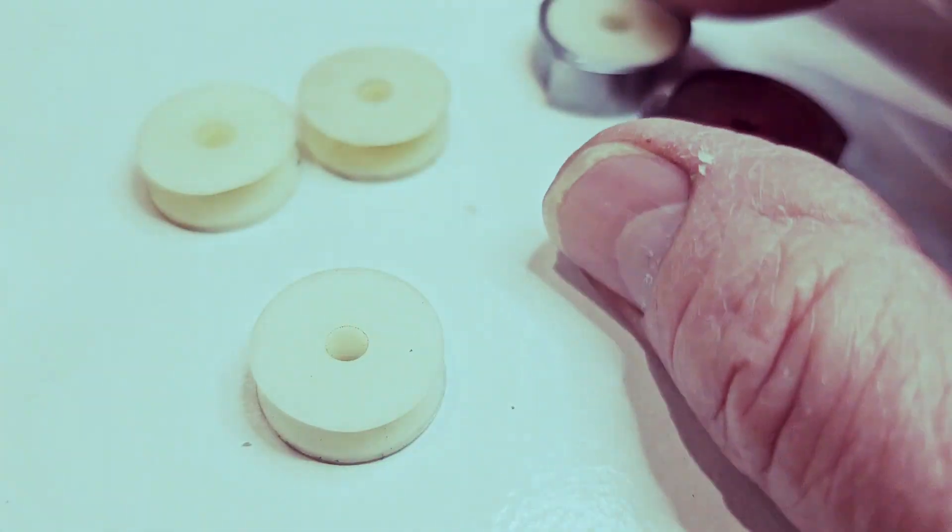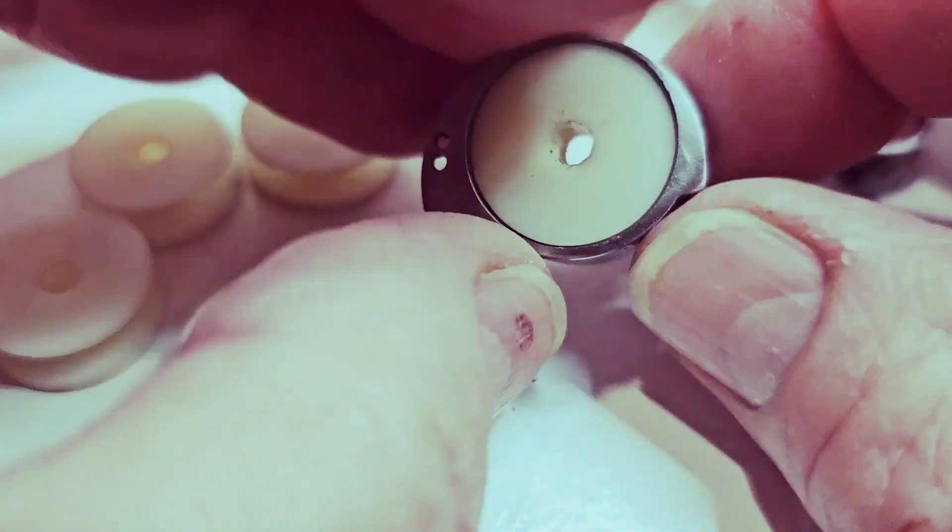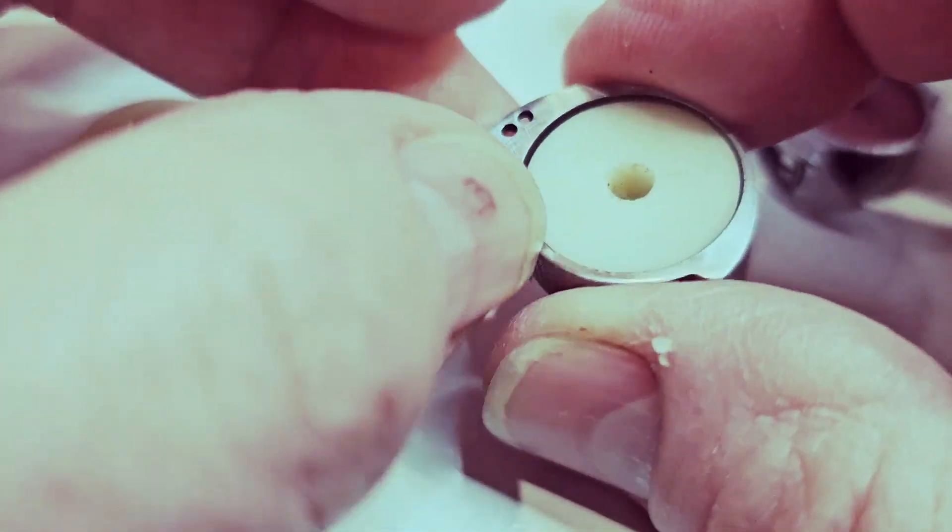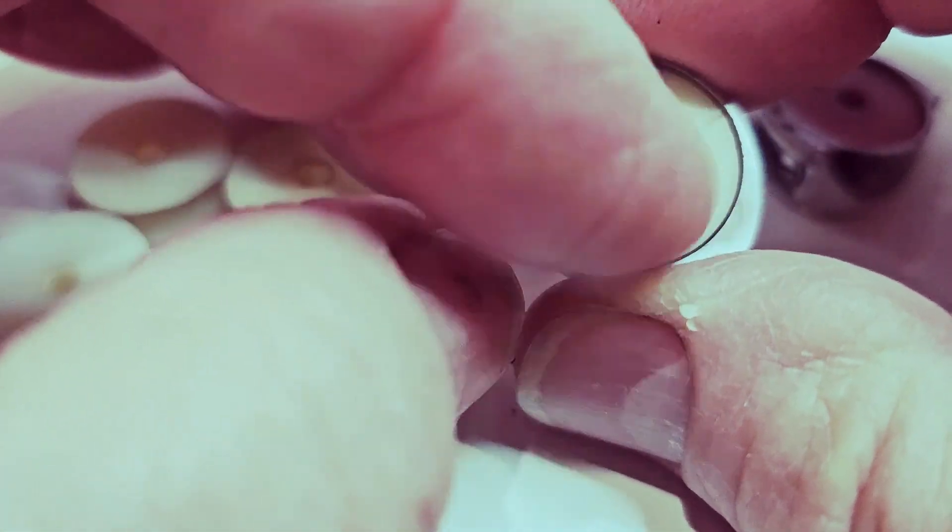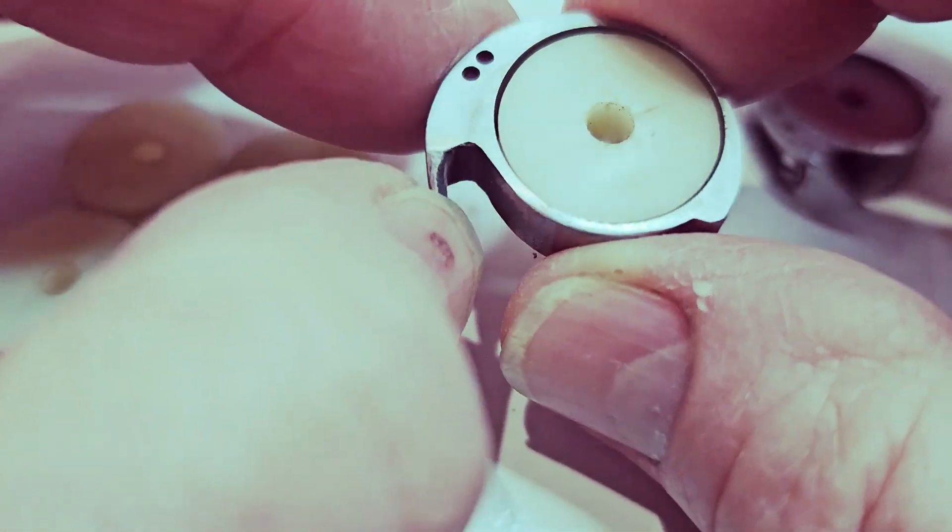Make sure you have an SLA printer, and you can print them in any color you want. When you first make these, you have to make sure that they're not too tight in the case. You want them to be able to move around a little bit so that they can spin freely.